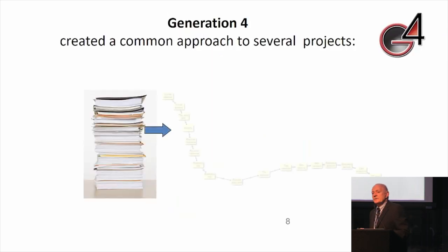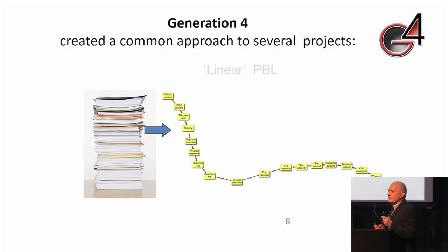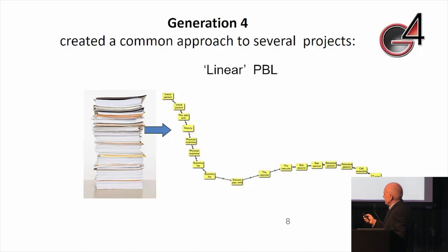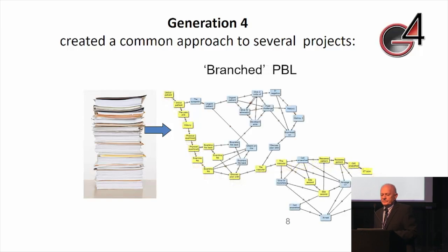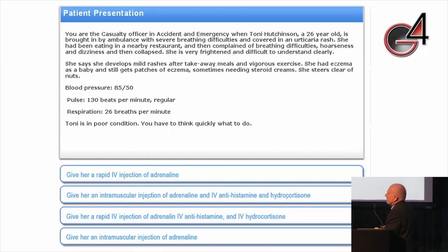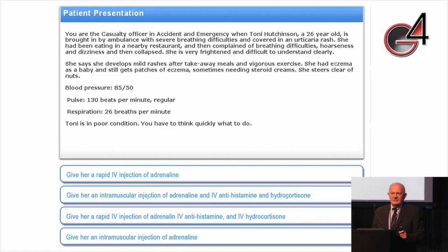We did it by taking the paper case and turning it into an online program of patient history, examination, and presentation, then at key points — always points of management — adding optional routes through the case. When working through the text, students would be presented with a series of options, and they loved this. We learned quite early on that going down the wrong path was really important because students remembered that much better. We had phrases like 'we tried and tried and still killed the patient — I'll never forget that.' So we were starting to realize that using these cases for error might be a very good idea.